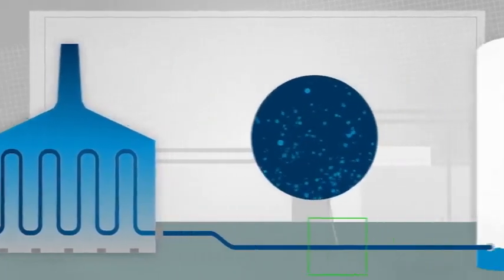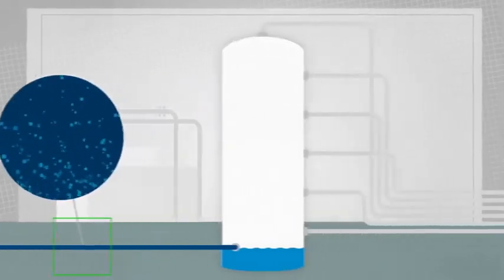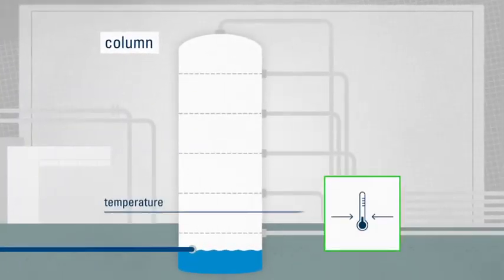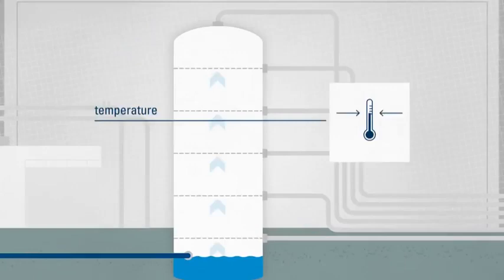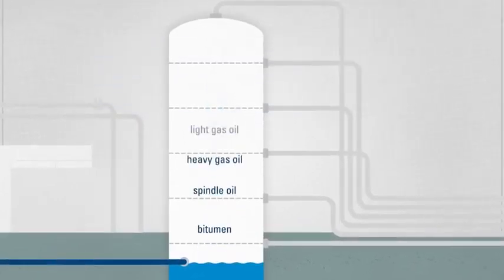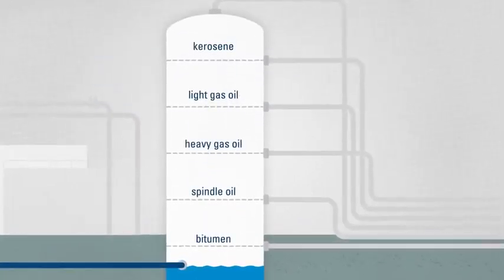This results in a hot mixture of steam and fluids which goes to this tower called a column. Here we exploit the natural temperature gradients. The hot gases rise, cool down on the way, and liquefy at their respective boiling points.